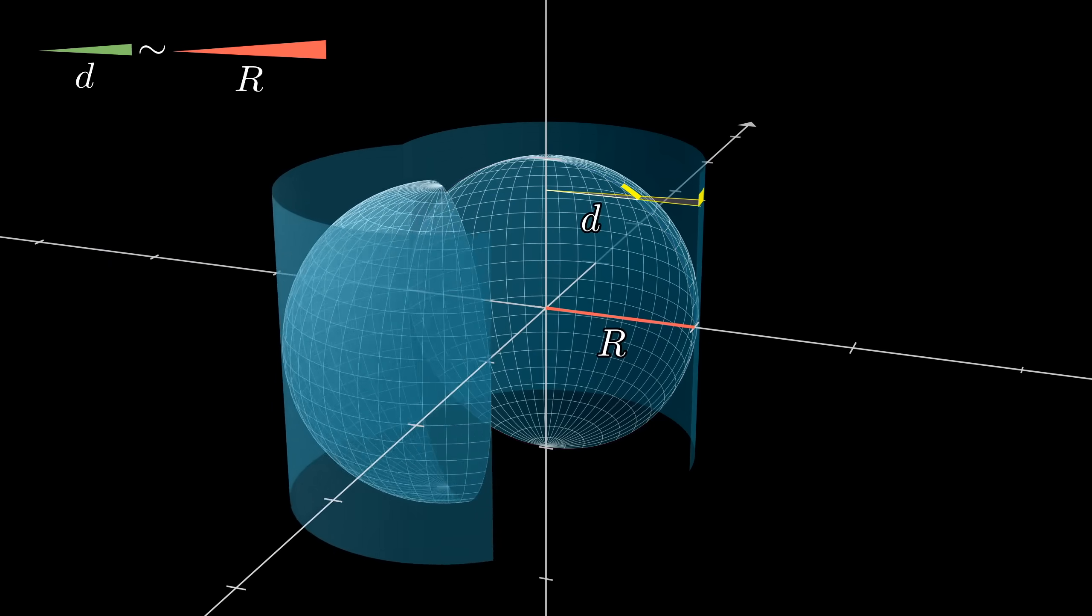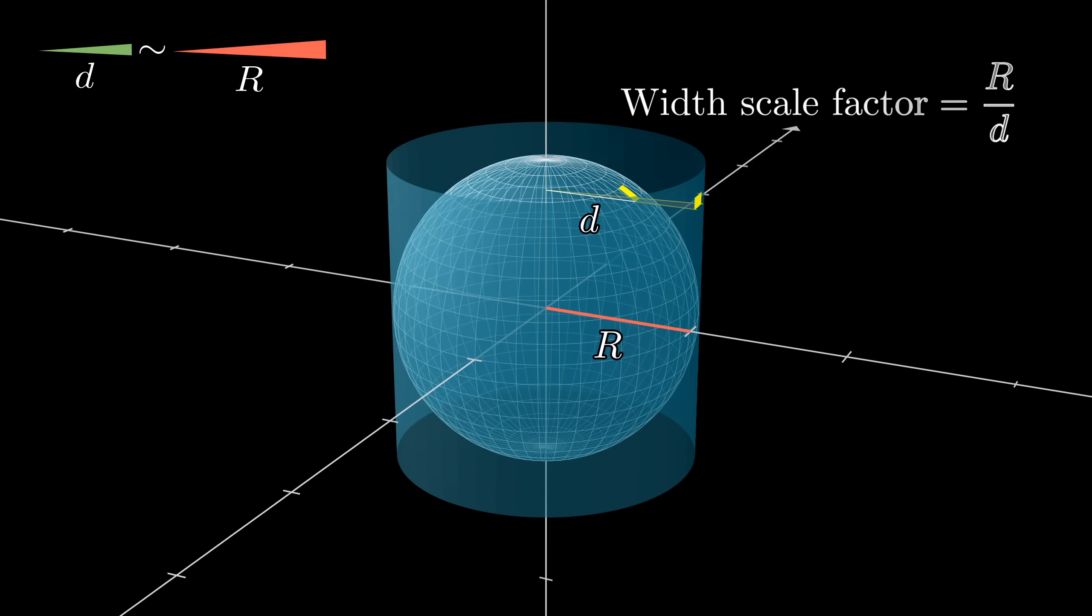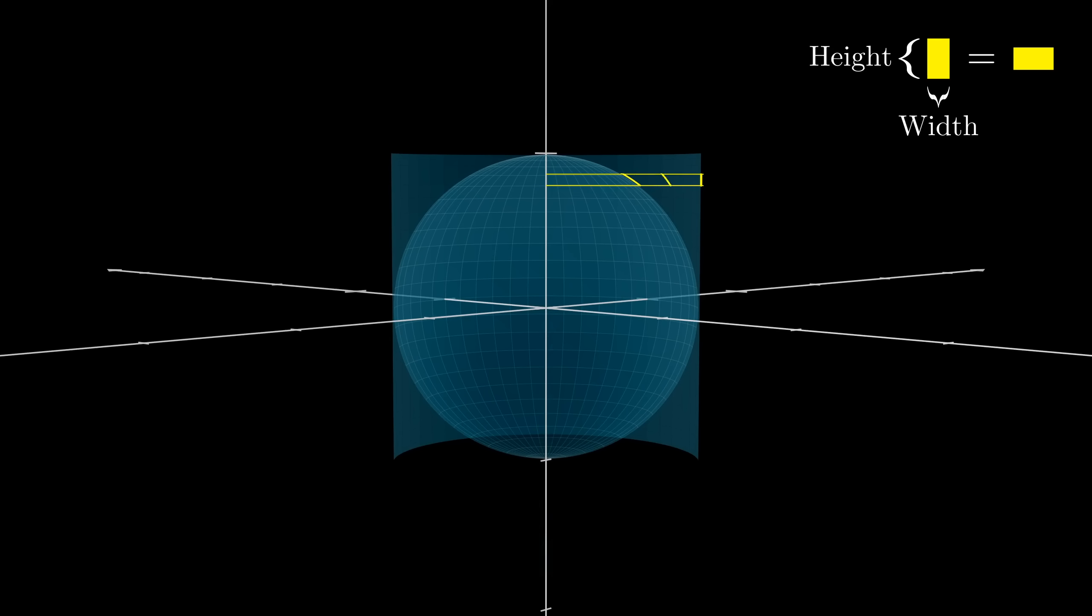So the ratio of their bases, which is how much our rectangle's width gets stretched out, is r divided by d. What about the height? How precisely does that get scaled down as we project?